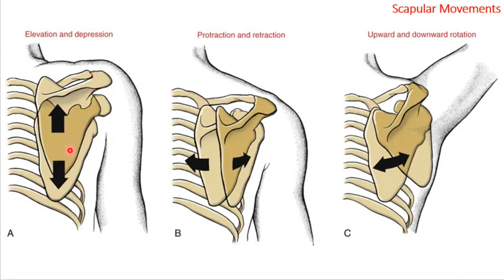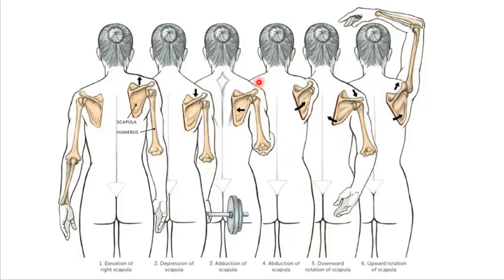Here's the depiction of elevation and depression — the shrugging of the shoulder and coming back down. The shoulder blades coming back in retraction, like pinching your shoulder blades back towards the spine, or going forward. You can see the relationship here with the humerus for elevation, depression, retraction, protraction, upward rotation, and downward rotation.